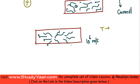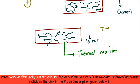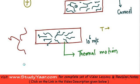This motion due to the inherent thermal energy is known as the thermal motion of the electrons. Thermal motion is a random motion in which electrons are moving in all possible directions, and therefore there is no net current flowing.